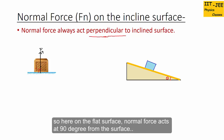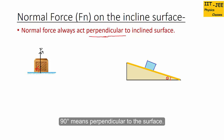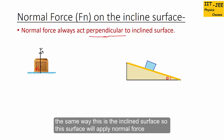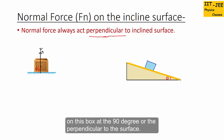On the flat surface, normal force acts at 90 degrees from the surface — 90 degrees means perpendicular. The same way, on this inclined surface, the surface will apply normal force on the box at 90 degrees, or perpendicular to the surface.